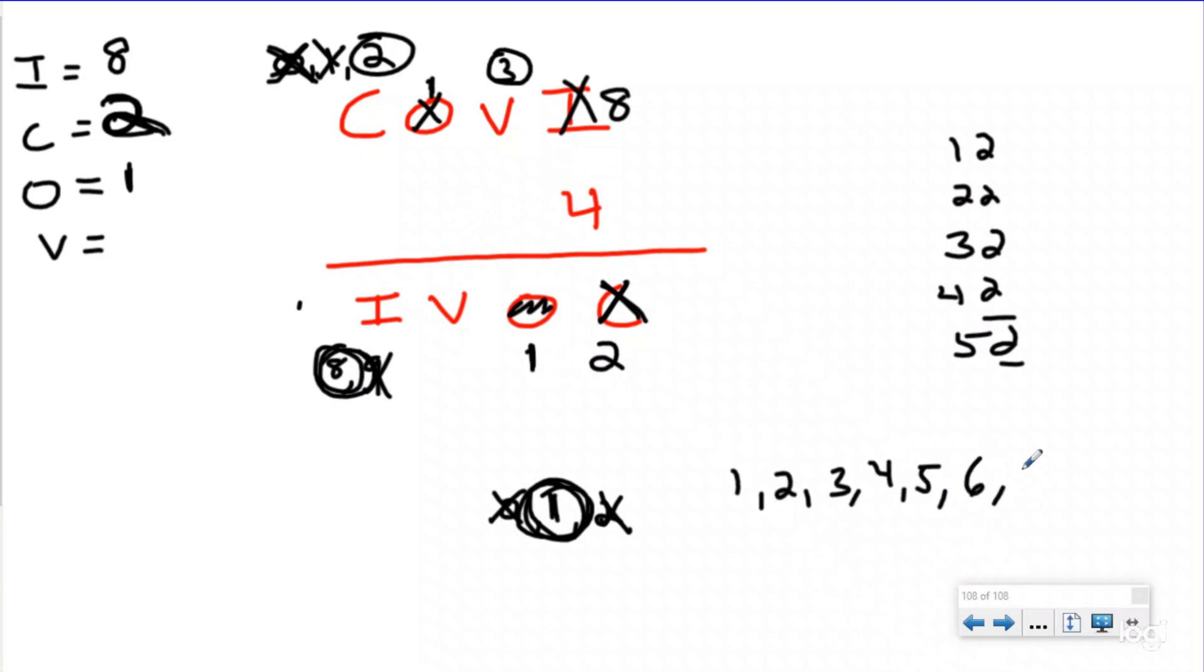So I can cross that out and put a one right there. Now I know O is one, which means this has to be one and my only thing left is V. Now if I list my numbers, I've already used one, can't be zero, I've already used two and I've already used eight. So I have a few numbers left. Now any number times four is going to be even because four is an even number. So if I multiply four times V, that means V has to be an even number. And then when I add three to it, it has to give me a number that ends in one.